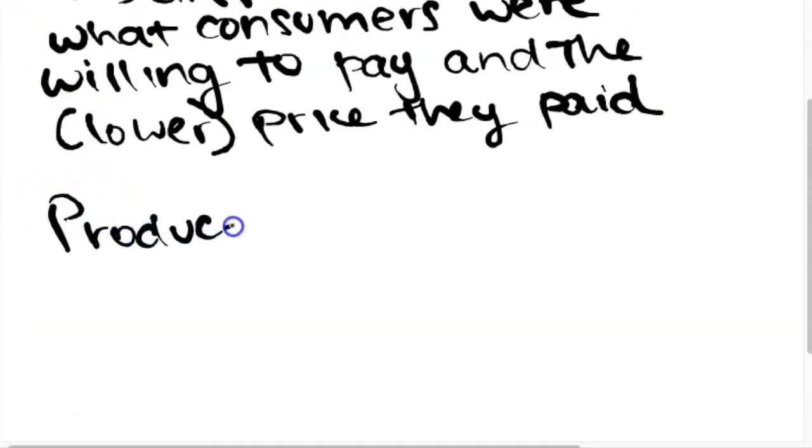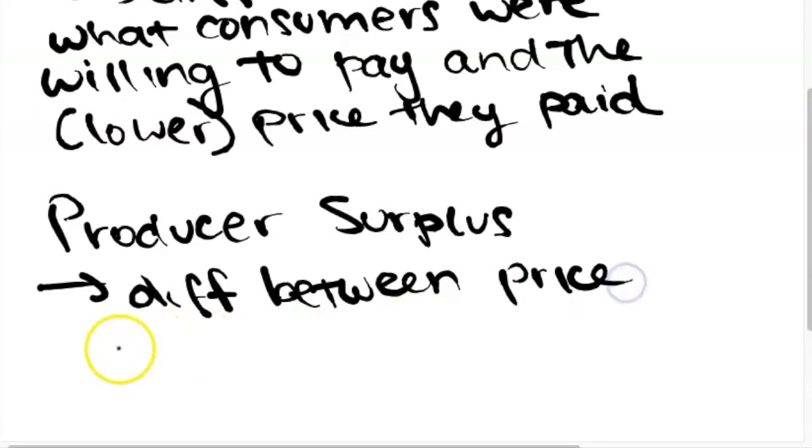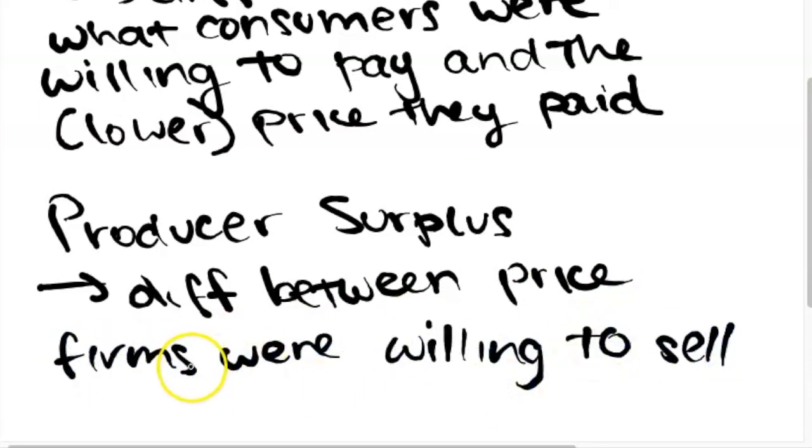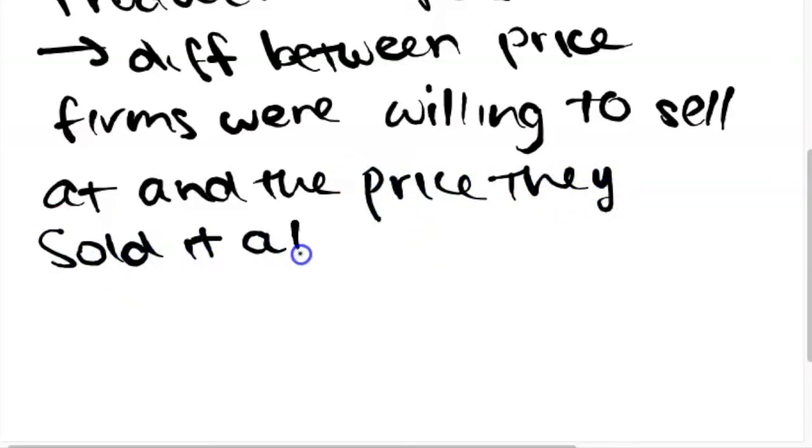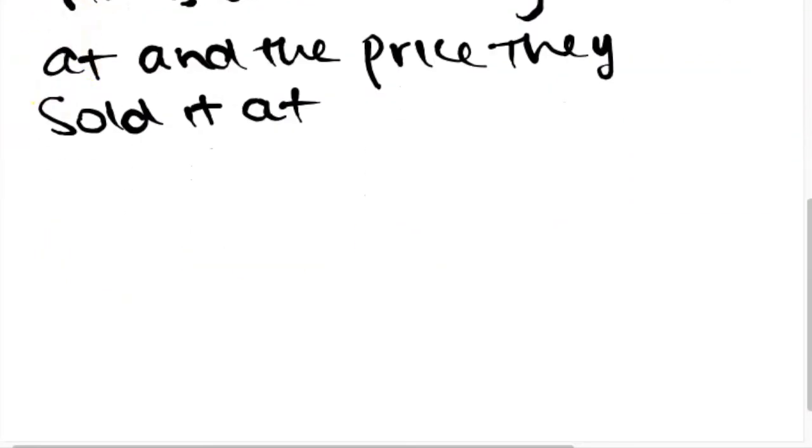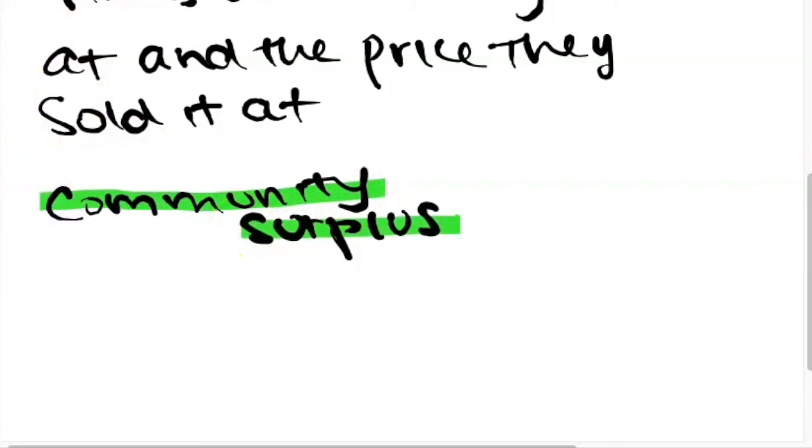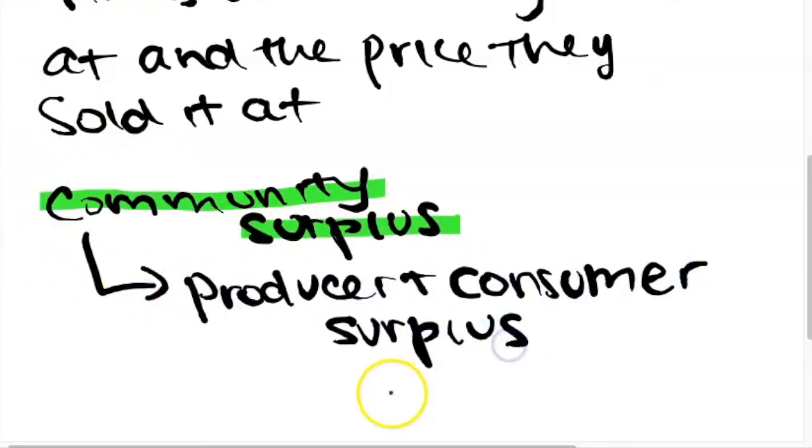The same idea goes for producer surplus. Producer surplus is the difference between the price that producers were willing to sell a good at and the price at which they actually sold at. So if a producer sells a product for $15 but they were willing to sell the product for only $5, then the producer surplus is $10. So in allocative efficiency, both consumer surplus and producer surplus are maximized. This is known as community surplus, the sum of producer and consumer surplus.